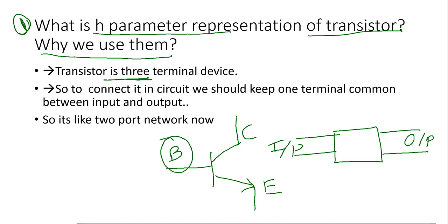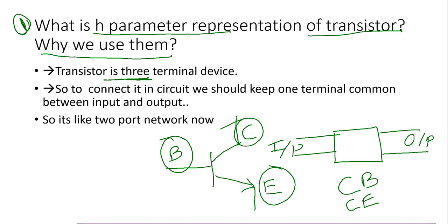The common terminal can be base, collector, or emitter. Depending on that, we have our configurations. If base is common, we call it CB configuration. If emitter is common, we call it CE configuration. If collector is common between input and output, we call it CC configuration.